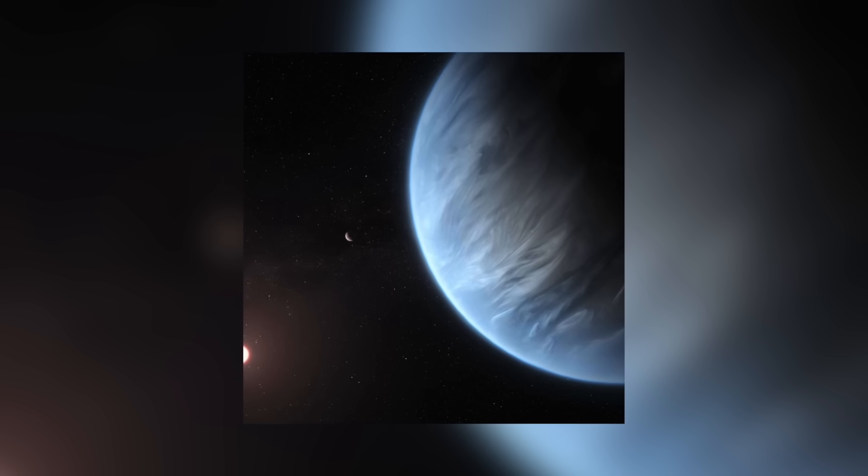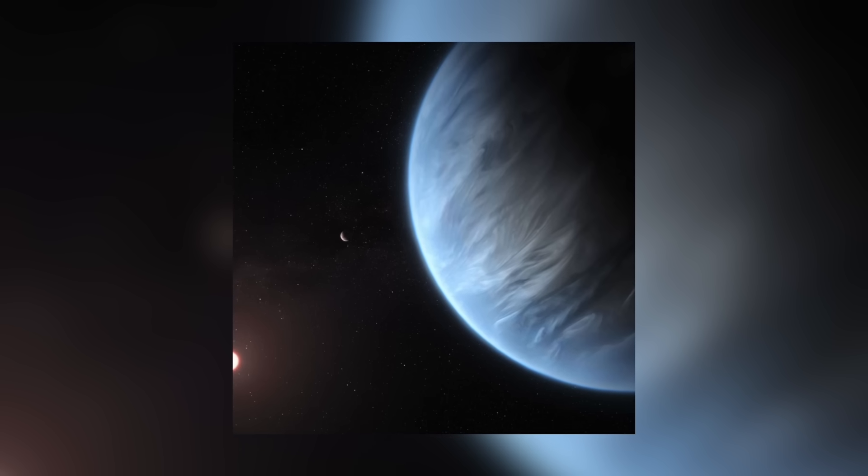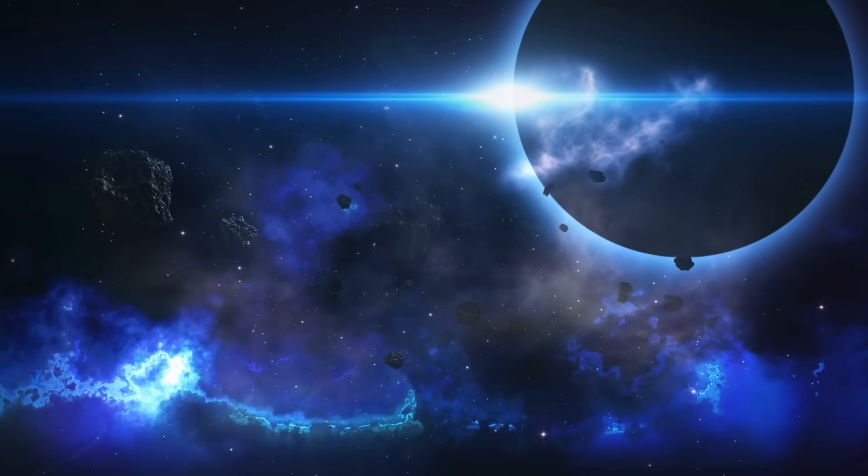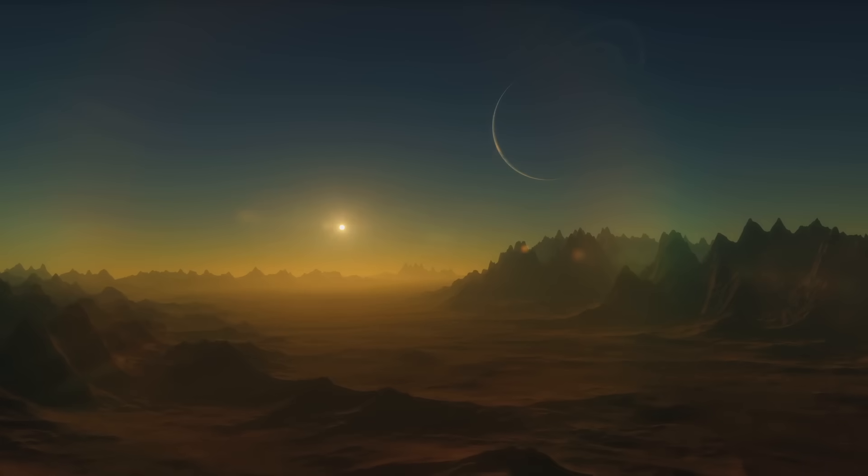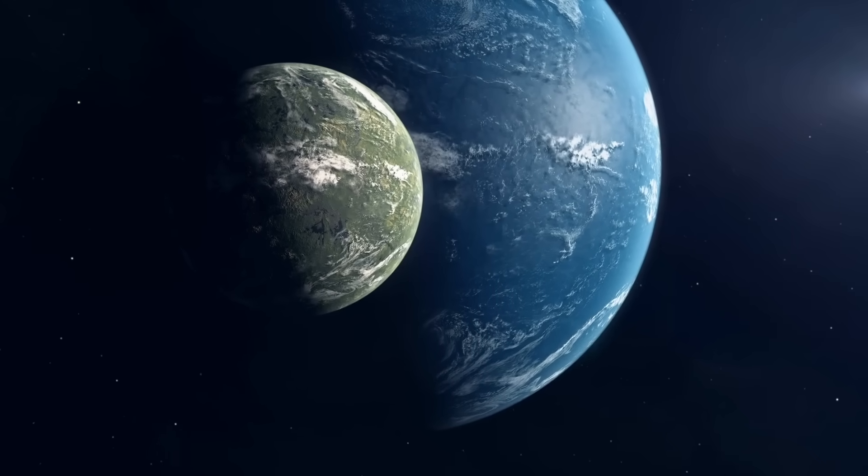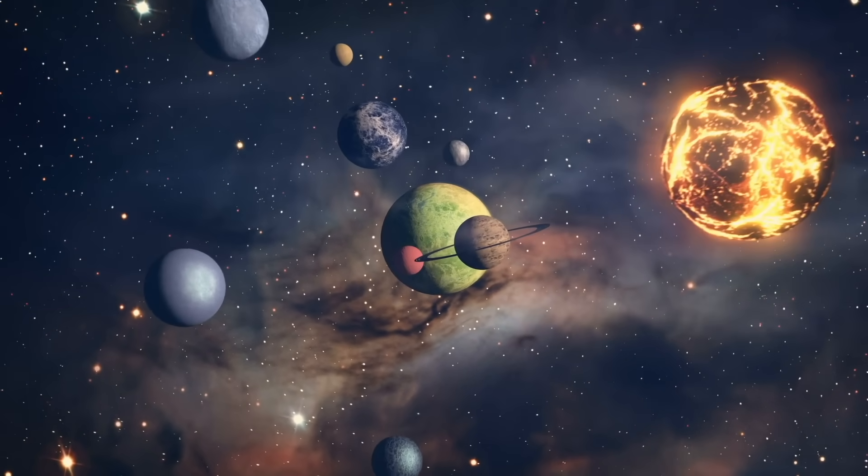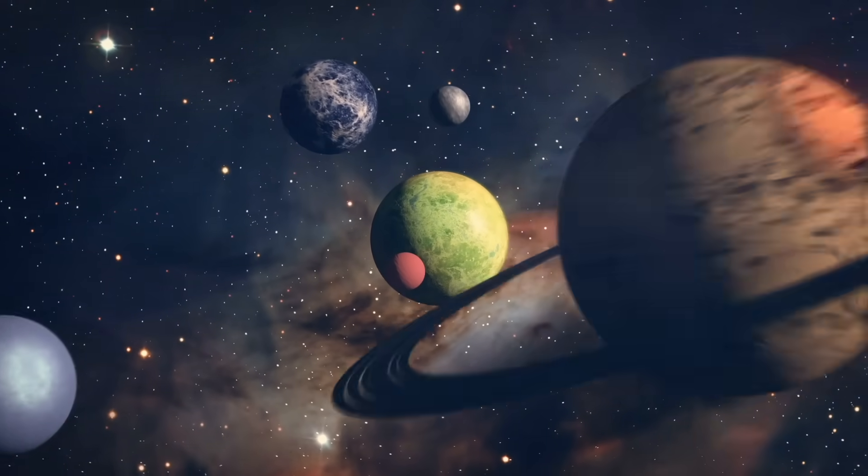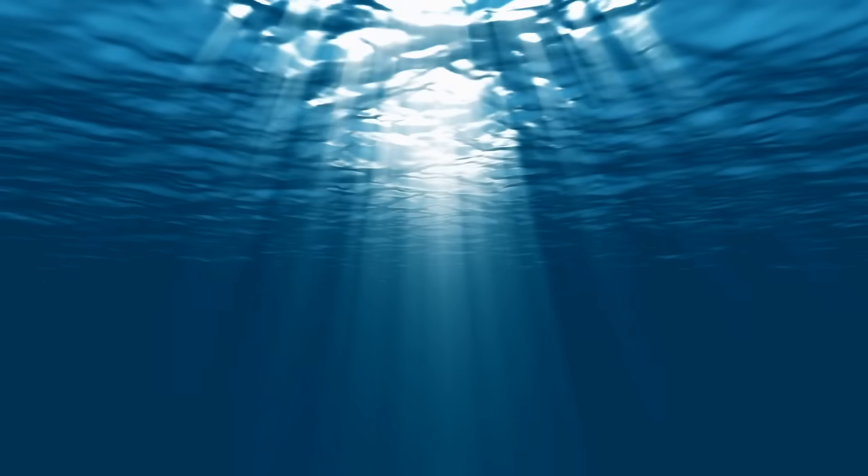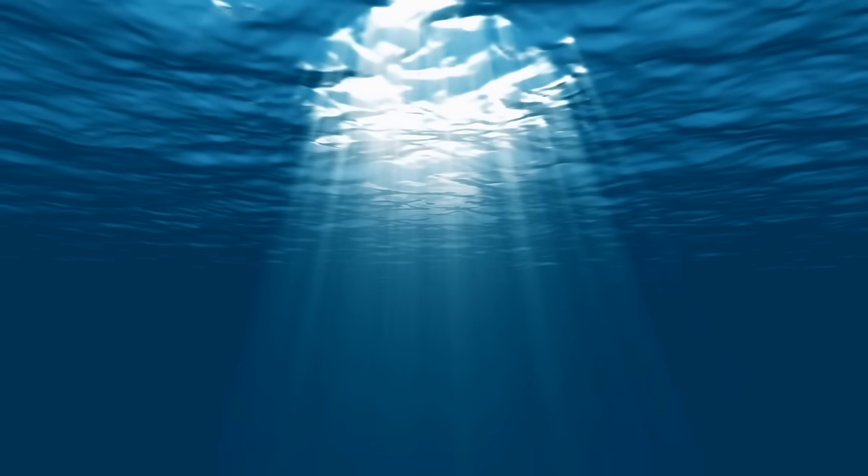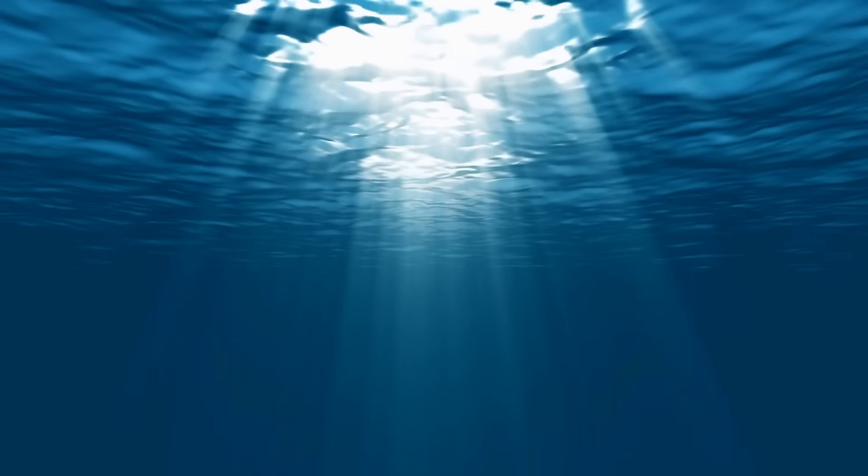K2-18b's radius is about 2.6 times that of Earth and it has a mass about 8 times that of Earth. Because it was very probably also classified as a rocky planet, K2-18b promptly made it into the league of super-Earths. These extraterrestrial worlds are somewhat larger than Earth, somewhat closer to their star and therefore warmer.